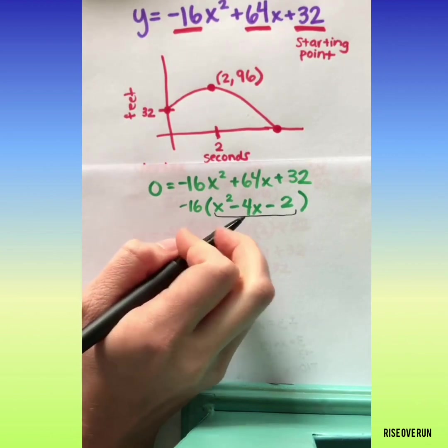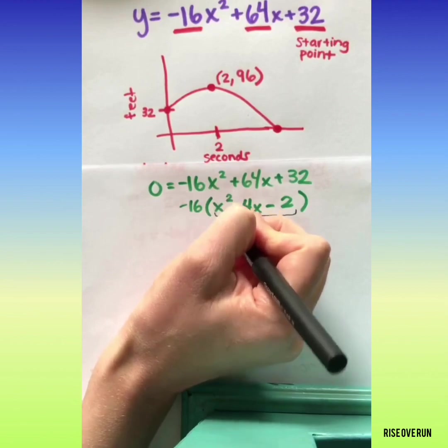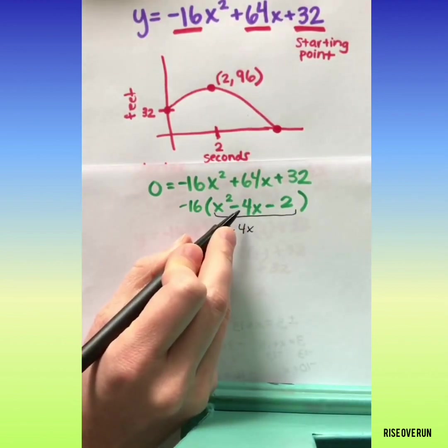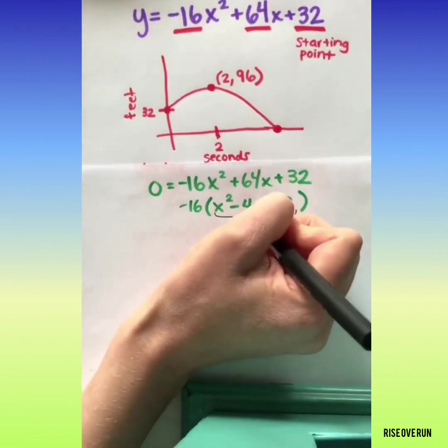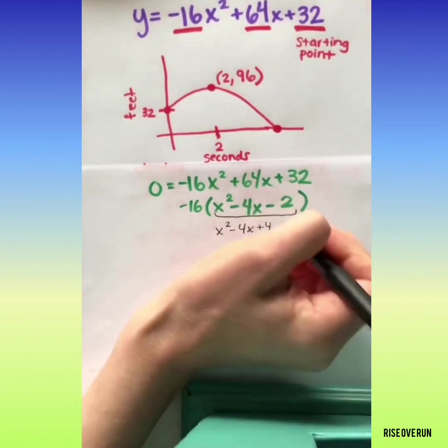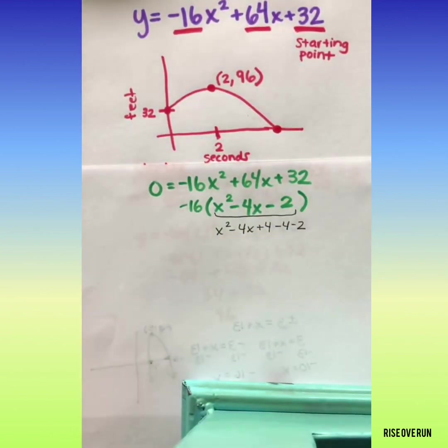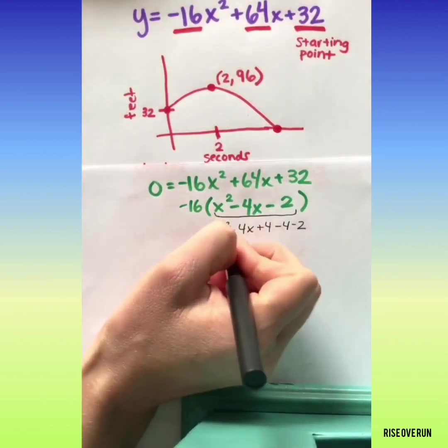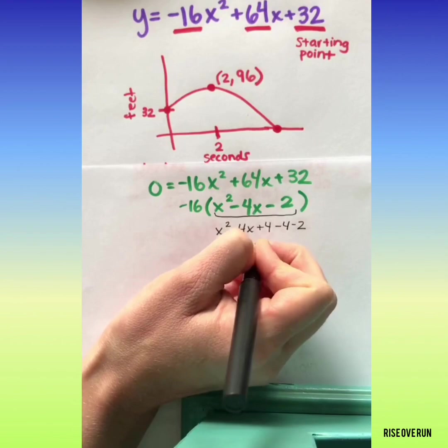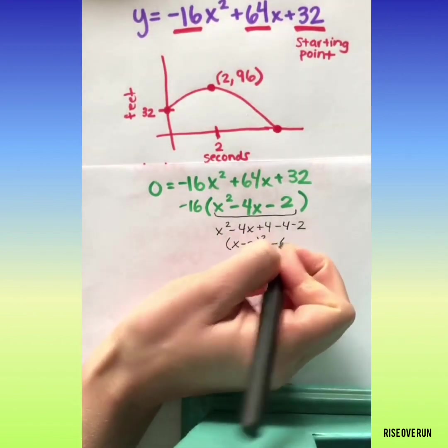So let's try to complete the square here. Half of this term is 2. Square that to get 4. Now I have a perfect square trinomial. If I add 4, I need to subtract 4, and I still have a minus 2. All right, so this front is x minus 2 squared minus 6.